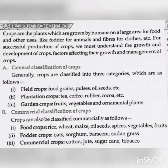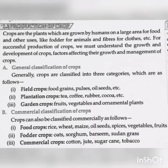Production of crops. Crops are the plants which are grown by humans on a large area for food and other uses, like fodder for animals and fibers, etc. For successful production of crops, we must understand the growth and development of crops, factors affecting their growth and management of crops. General classification of crops: crops are classified into three categories — field crops (example: food grains, pulses, oil seeds, etc.); plantation crops (example: tea, coffee, rubber, cocoa, etc.); and garden crops (fruits, vegetables and ornamental plants).